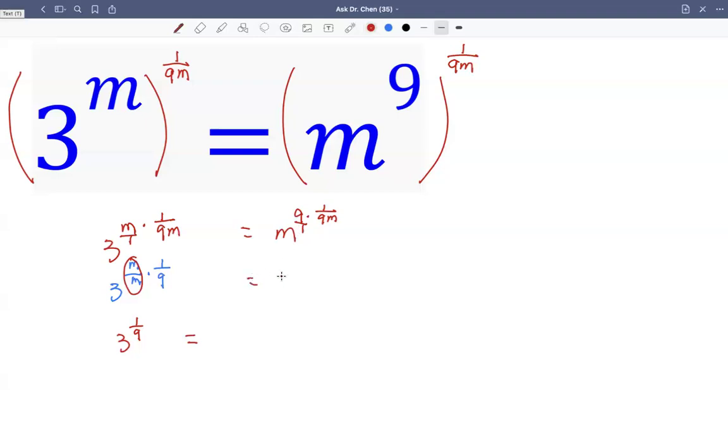I can write this as m raised by 9 over 9 times 1 over m. Again, 9 over 9 is just 1, something divided itself becomes 1. So this becomes m raised by 1 over m. Getting very close to the pattern, right?